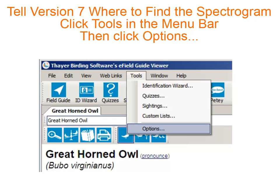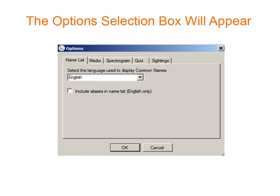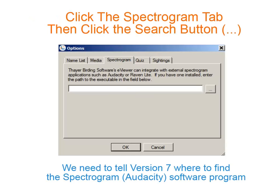Now tell version 7 where to find the spectrogram. Just click Tools and then click Options. When you do this, the option selection box appears. Click the Spectrogram tab, then click the Search button.